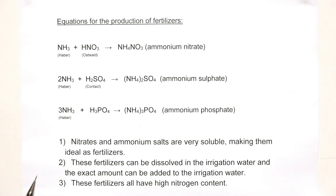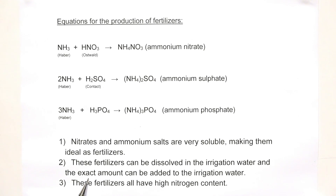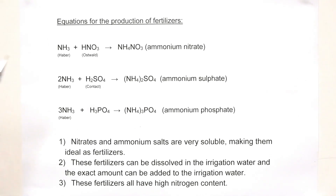A few additional points that come up in exams: nitrates and ammonium salts are very soluble, which makes them ideal as fertilizers. These fertilizers can be dissolved in irrigation water and the exact amount can be added, so there won't be any over-fertilization or waste. And these fertilizers all have a very high nitrogen content — remember, nitrogen is very important for strong stems and leaves. Now we're going to look at the production of ammonia, nitric acid and sulfuric acid.